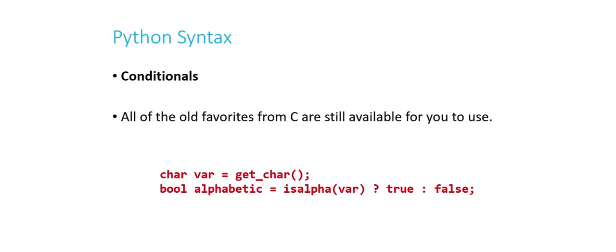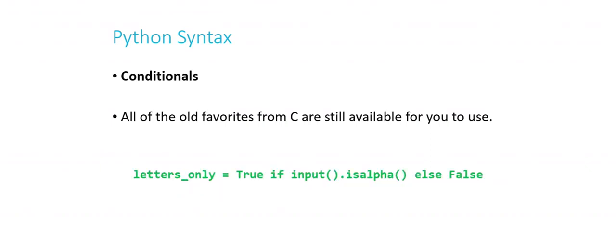Python also has the ternary operator, though it looks a bit different and you might not use it frequently. Note that True and False are now capitalized in Python, as opposed to lowercase in C. These little syntax differences are the kinds of things that vary from language to language, but the general concepts are what matter. They'll become second nature quickly if you use Python for more than a week or so.